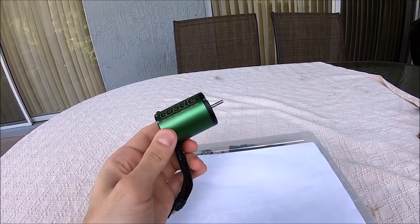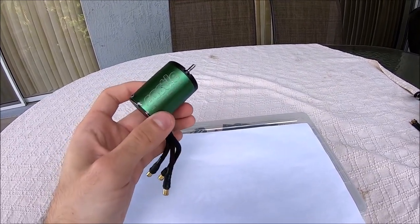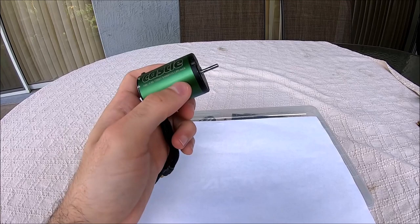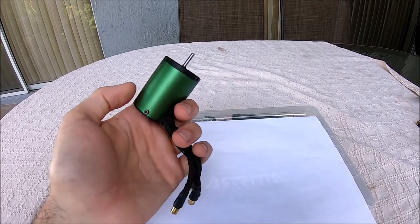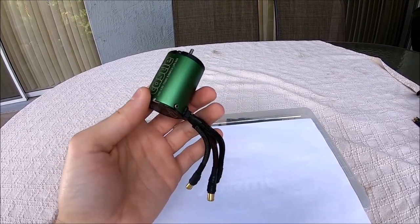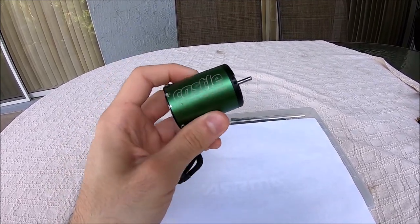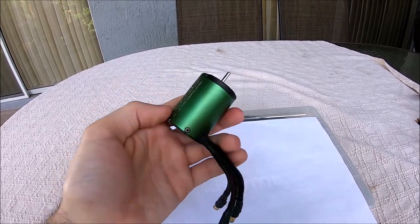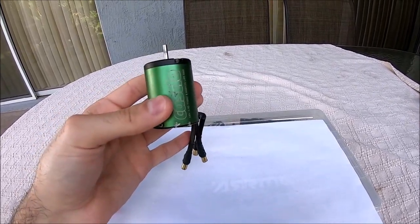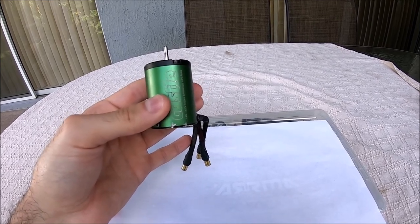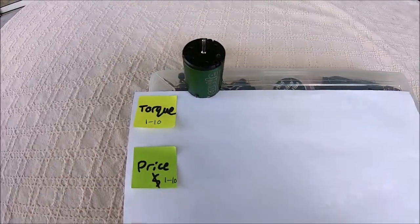First up, we have the 1406 7700 KV motor. This is a maximum of 2S lipo that you can run on this, you cannot run 3S because the KV is just way too high. Now why am I showing an older generation motor? Well, one, this is the only one that I had. Two, I also wanted to discuss if you were to have the newer version 3800 KV, this is pretty much more of an RPM speed motor.